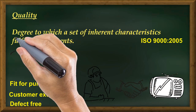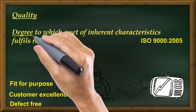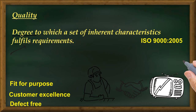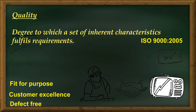Look at the term 'degree' here. What does this term mean? It means that it is not yes or no — it is not that the requirements are being met or not being met. You cannot say that there is quality or there is not quality. It is the degree to which the product meets customer requirements that is called quality. That's the official definition of quality as per ISO 9000-2005.